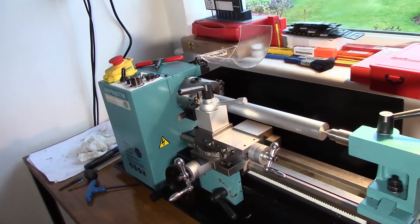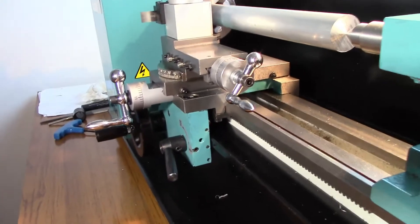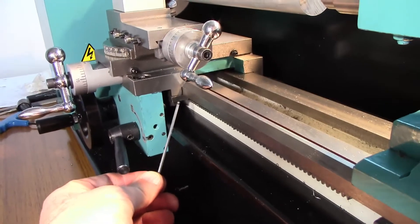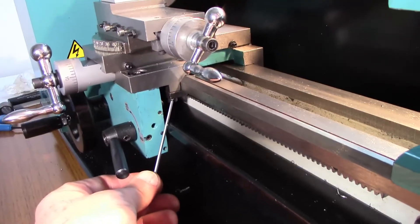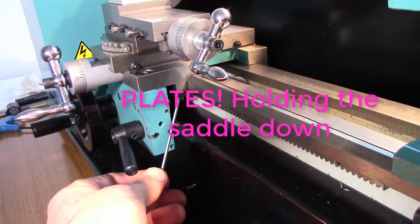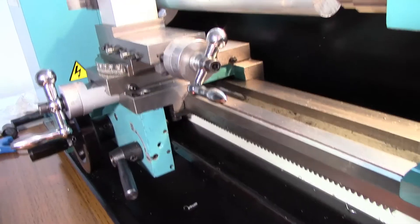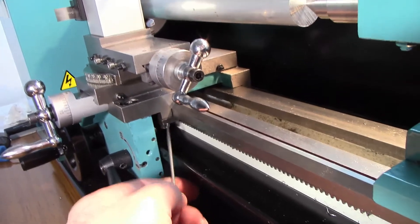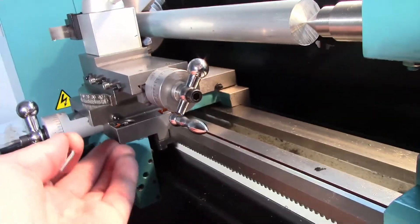I've made two modifications to the lathe since my last failed efforts at parting off. One is to put shims under the things which hold the cross slide onto the base of the lathe. Get rid of the grub screws and tighten these hex bolts down properly. That's pretty well eliminated any upward movement of the saddle here.